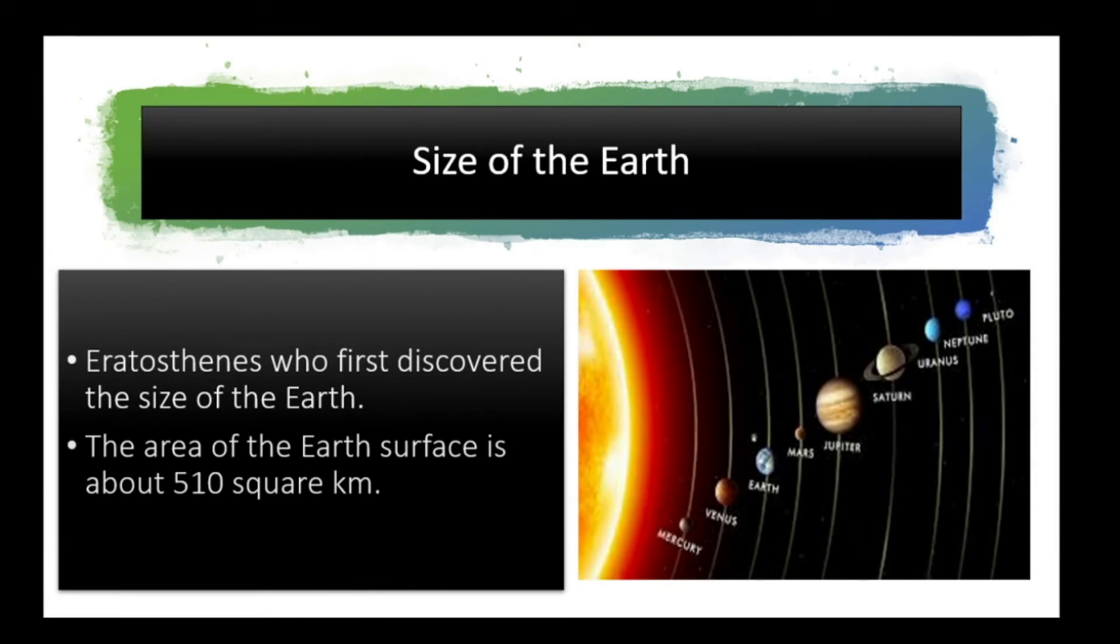So here is the size of the Earth. Eratosthenes is the one who first discovered the size of the Earth. The area of the Earth's surface is about 510 square kilometers.